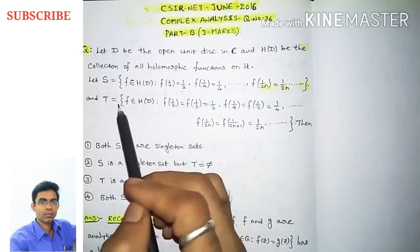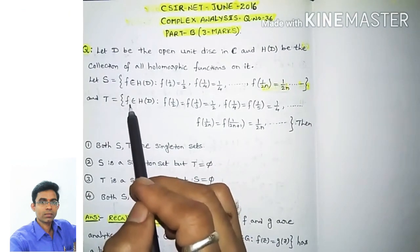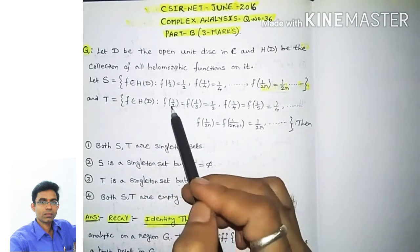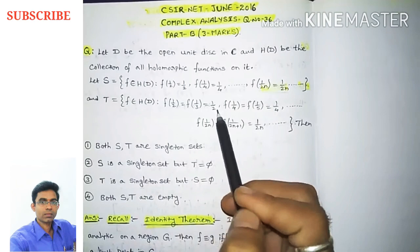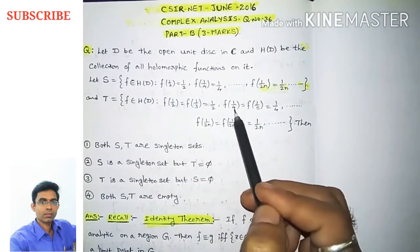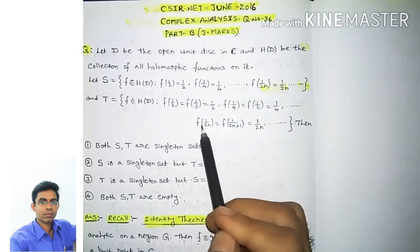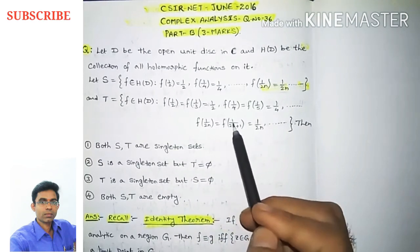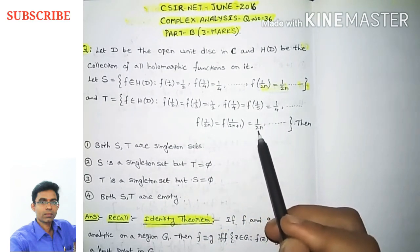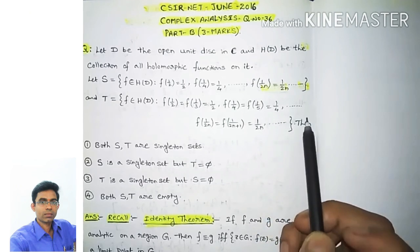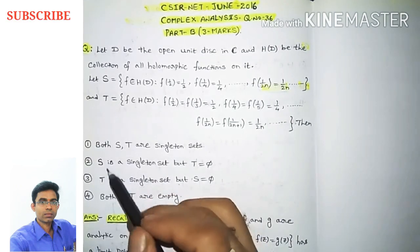Another set capital T is defined as the set of all f belonging to H(D) such that f(1/2) = f(1/3) = 1/2, f(1/4) = f(1/5) = 1/4, and in general f(1/2n) = f(1/(2n+1)) = 1/2n, and so on.